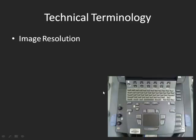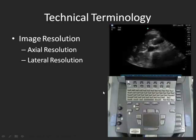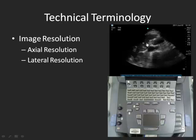The next thing I want to talk about is image resolution. There are four components to image resolution. The first two are axial and lateral resolution. Axial resolution is how well you can discern something that is more anterior versus more posterior — along the long axis. Lateral resolution is on a more horizontal plane: discerning what is on the left side of the screen versus the right side.